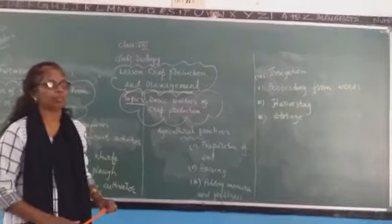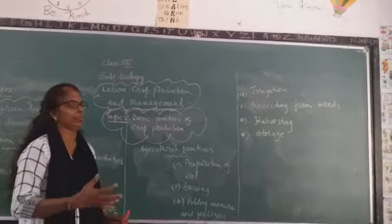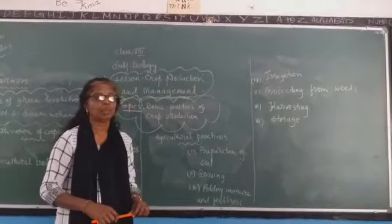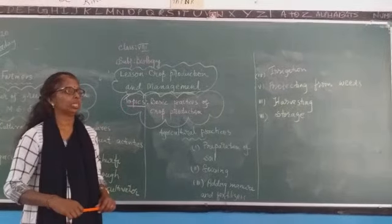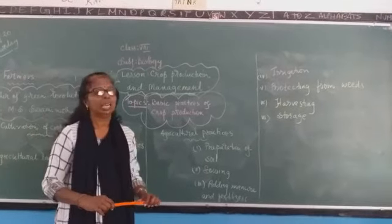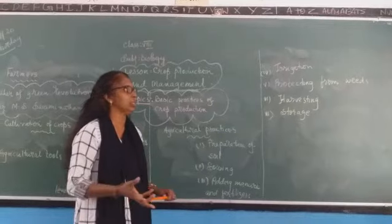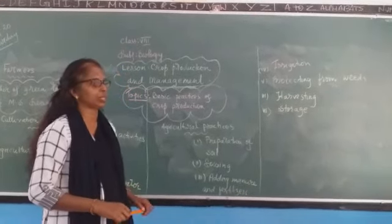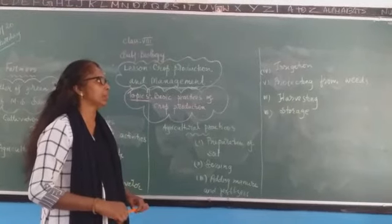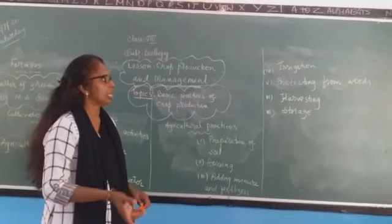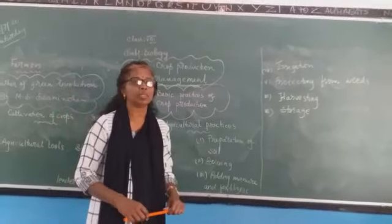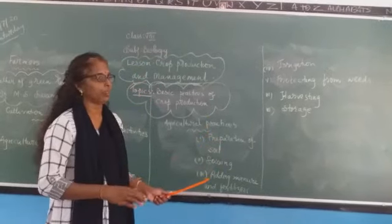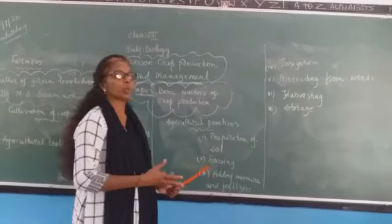Next, after adding manure and fertilizers, what should we do? We know that if plants are at home, we give water to them. That is called irrigation. So irrigation should be done. Then after that the next step is protecting from weeds. After that the next one is harvesting, and the last one is storage. These all are the different steps involved in crop production.